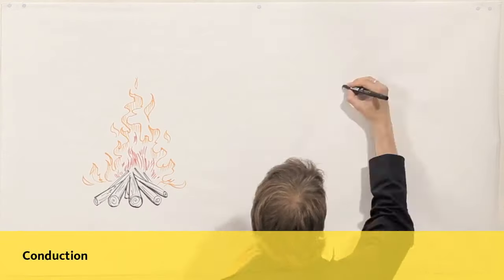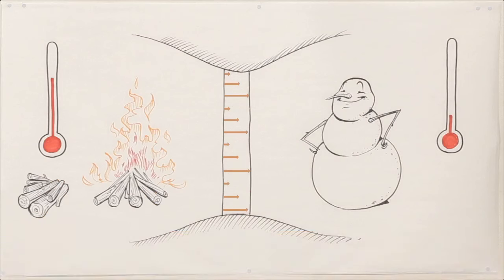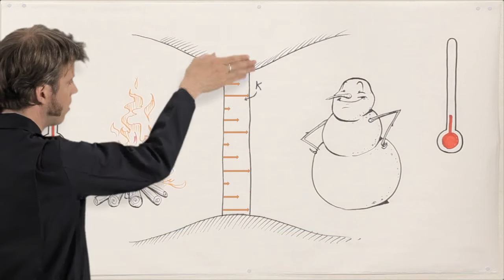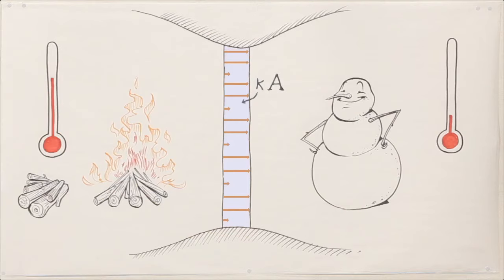Let's start with conduction. That's heat flowing through a material, like the wall of a refrigerator. More heat flows as the material gets more conductive, the surface area gets larger, and the temperature difference gets bigger.